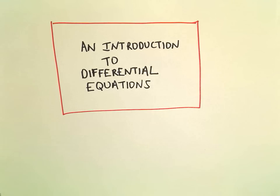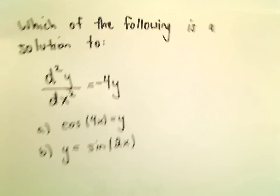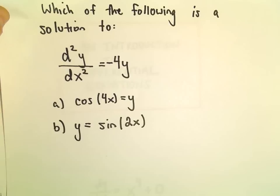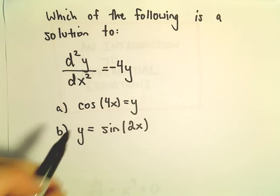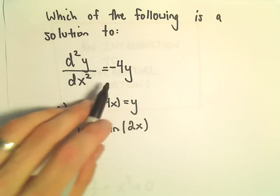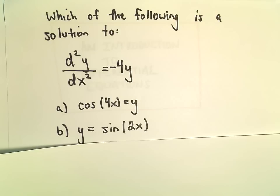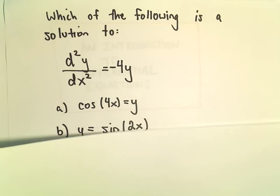Let's look at one other — very similar idea. Now instead of just a first derivative, we've got a second derivative. So the second derivative with respect to y is negative 4y. We have these two functions and we want to know which one, potentially both, could be solutions here.